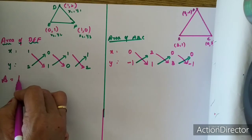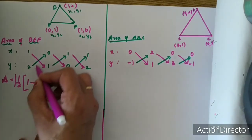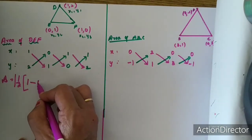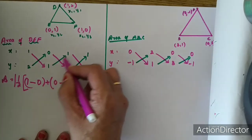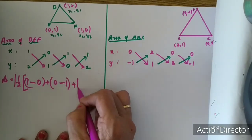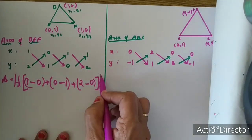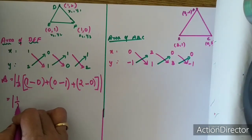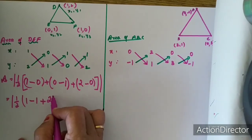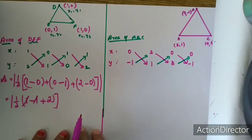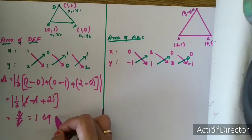Area is equal to half in modulus. Multiplying: pink arrows — 1 into 1 is 1; subtract green arrow — 2 into 0 is 0. Next plus 0 into 0 is 0, minus 1 into 1 is 1. Again 1 into 2 is 2, minus 0 into 1 is 0. So modulus of: 1 minus 0 is 1, minus 1 plus 2. Minus 1 and plus 1 cancel, leaving 2 divided by 2, equal to 1 square unit.